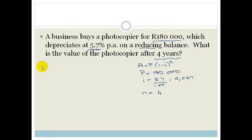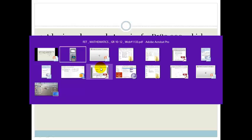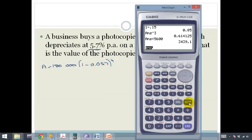Let's substitute. So we've got A which is the amount of money we'll have or the value of the photocopier after 4 years equals 180,000 times 1 minus 0.057 all to the power of 4. So we get our calculator and we clear it and we go 1 minus 0.057 equals to the power of 4 equals times 180...